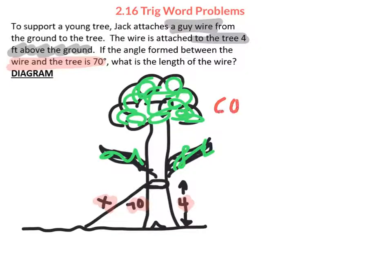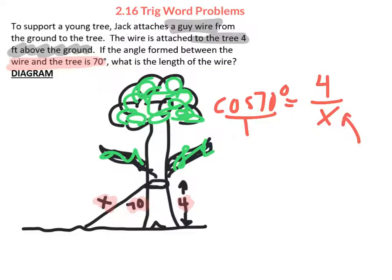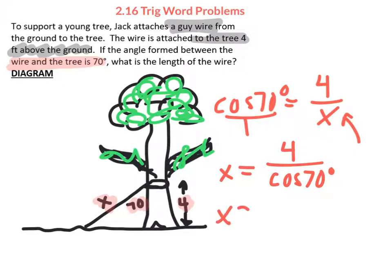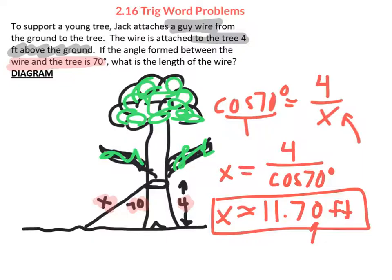Since the angle gives us the adjacent side of 4 and the hypotenuse x, this is a cosine question. The cosine of 70 degrees equals 4 over x. When x is in the denominator, that solves to x equals 4 divided by the cosine of 70, which approximates to 11.70 feet. Students often place the 70-degree angle incorrectly — it is between the wire and the tree, so be careful.